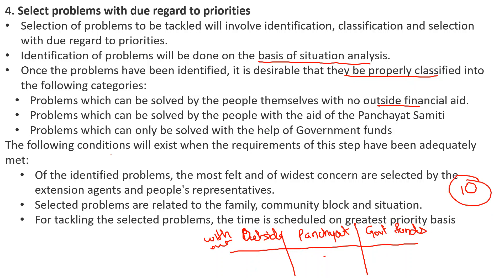This step is completed when: the most felt and widest-concern problems are selected by extension agents and people's representatives from among the identified problems; the selected problems are related to family, community, block, and situation; and for tackling the selected problems, time is scheduled on a priority basis. This is the fourth step.